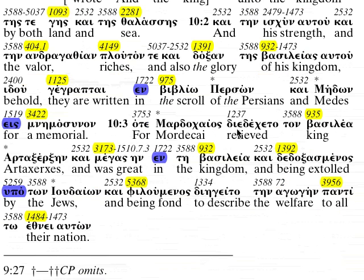'Oti Mardocheos dia vegeto ton vasilea Artaxerxes, que megas in inti vasilea, que doxasmenos ipo ton iudeon.' For Mordecai relieved King Artaxerxes — he was second in command, took over when needed. And was megas — a megaton bomb — great, in the vasilea. And being extolled. Here you see the doxa — it's a verb — being glorified. Doxa, the doxology we had earlier. This is a verb.